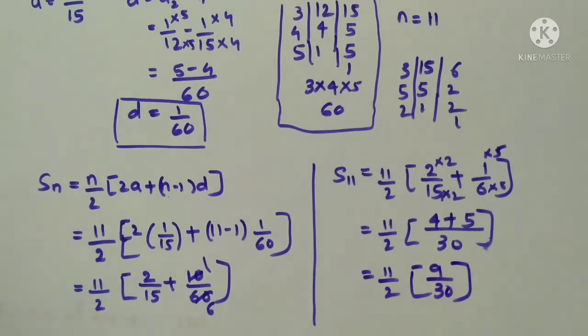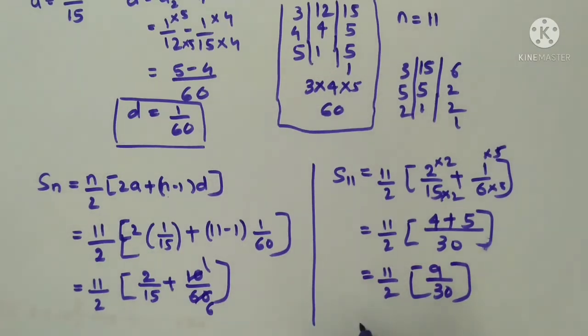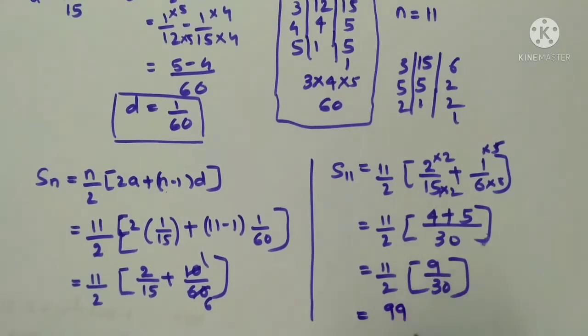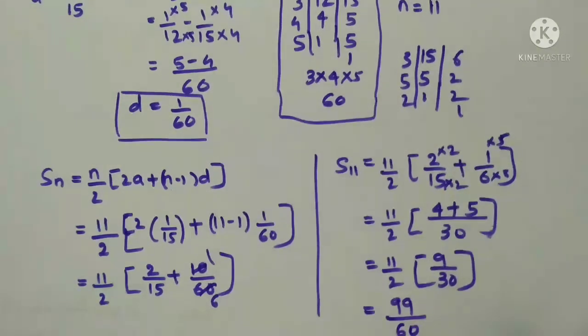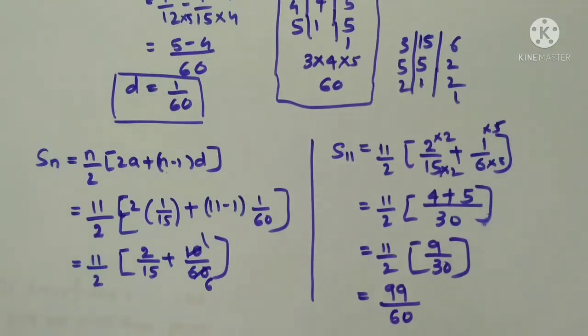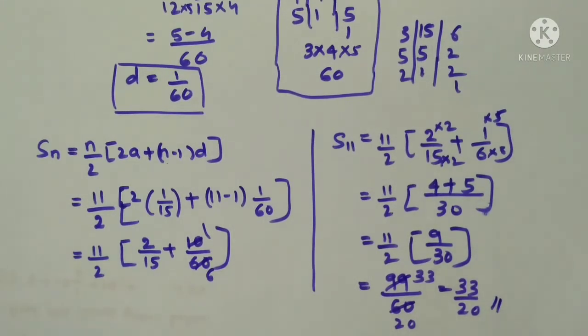Now see if you can't cancel anything, just you see here. So I will write off directly what it is, 9 into 11 is 99. 11, 9s are 99 divided by 2 into 30 is 60. So like this we will get the answer. Now you see these 2 will go by the 3 table. 3, 2s are 20, here 3, 3, 33 by 20. Now we can't cancel, that much only is the answer here.